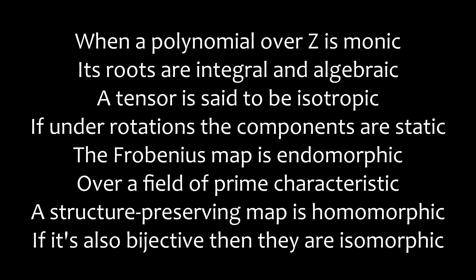The Frobenius map is endomorphic. Over a field of prime characteristic, a structure-preserving map is homomorphic. If it's also bijective, then they are isomorphic.